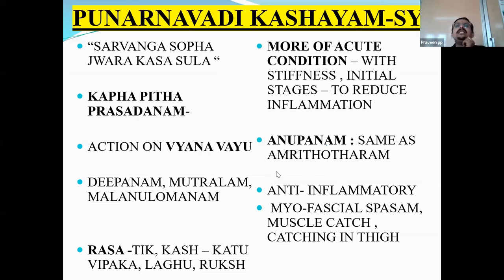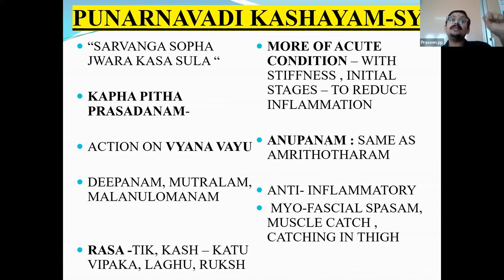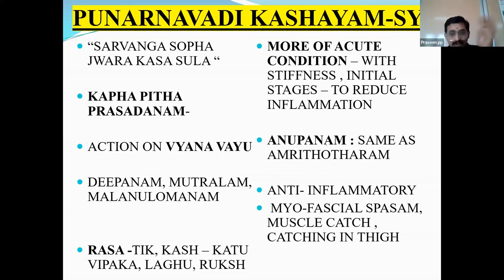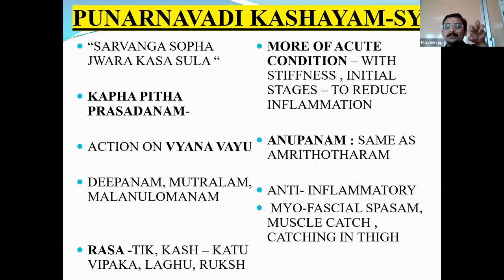Punarnavadi kashayam is indicated for sarvanga shopha, jwaragraja, and shula. It is mutrala and anti-inflammatory. It is a tikta kashayam covering sapta dhatus, with mutrala, malasamana, and deepana properties. In acute injury conditions, or acute stiffness not due to trauma, Punarnavadi kashayam can be given. It reduces inflammation, acts on vyana vayu, and is useful in catching conditions and myofascial spasm conditions.